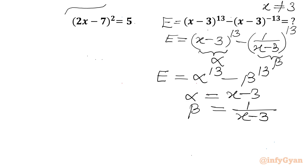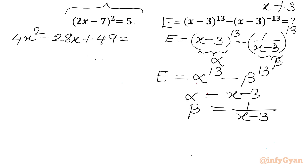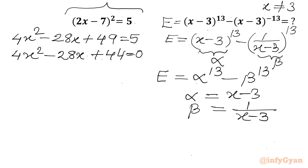Now let's consider our given equation. Applying the (a-b)² formula to the left-hand side, we get 4x² - 28x + 49 = 5, or 4x² - 28x + 44 = 0, which simplifies to x² - 7x + 11 = 0 after dividing by 4. This is our quadratic equation.